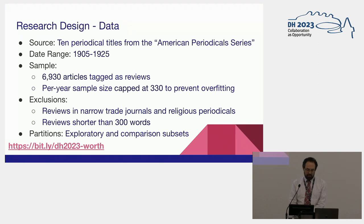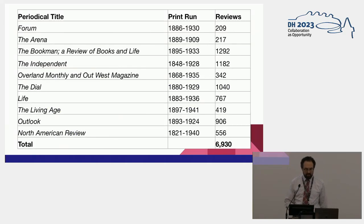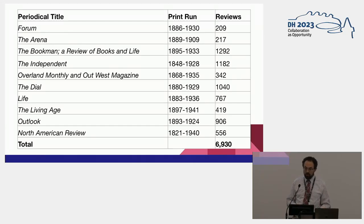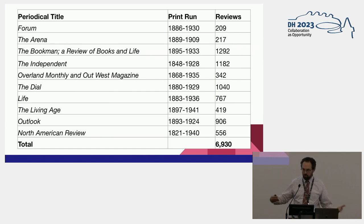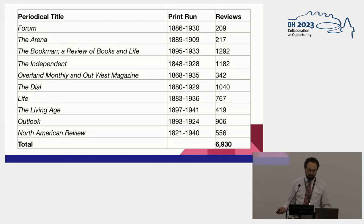I divided the sample of 6,930 into an exploratory and a comparison subset. This is a list of the actual periodical titles, with the full print run and the number of reviews in the sample. There are some titles that have many more reviews than others, but no one periodical title has so many that it creates a distorting effect. The selection is based on the availability in the ProQuest database.